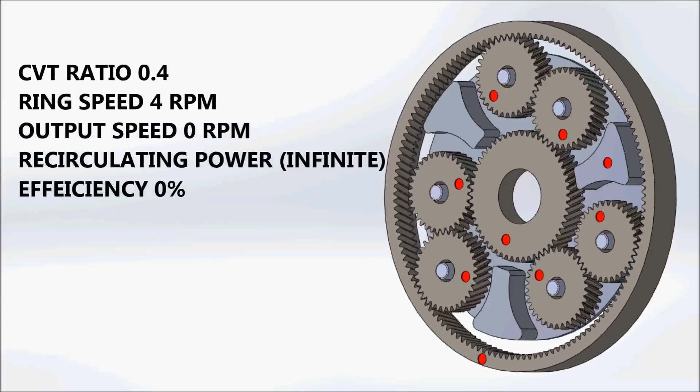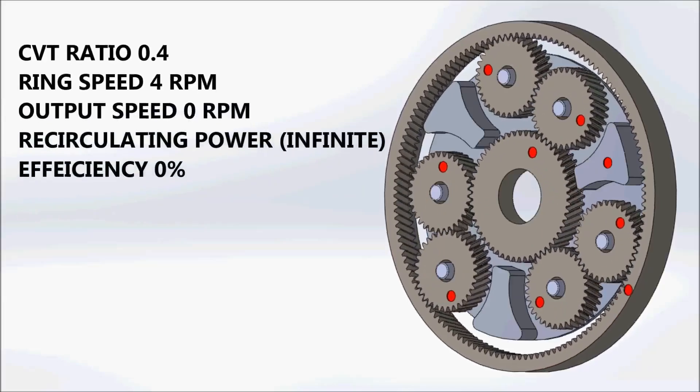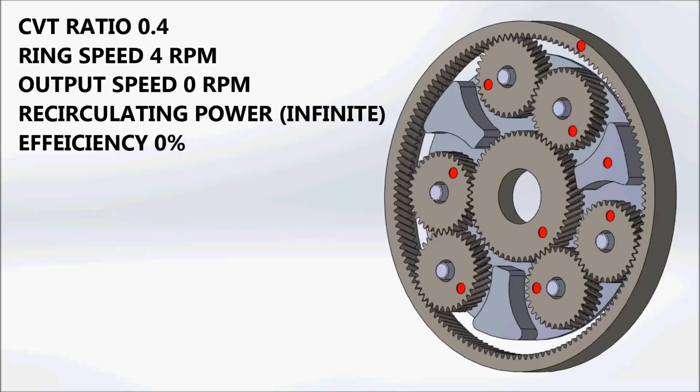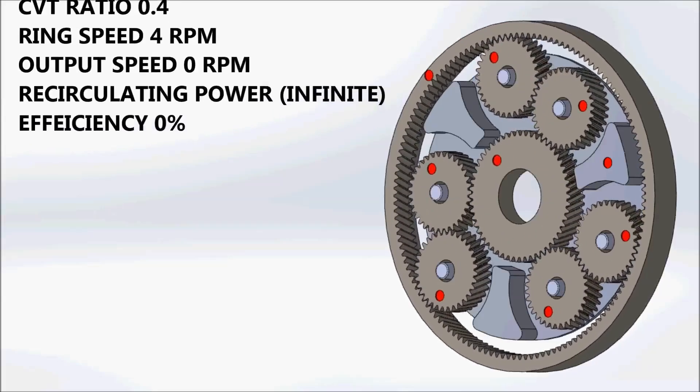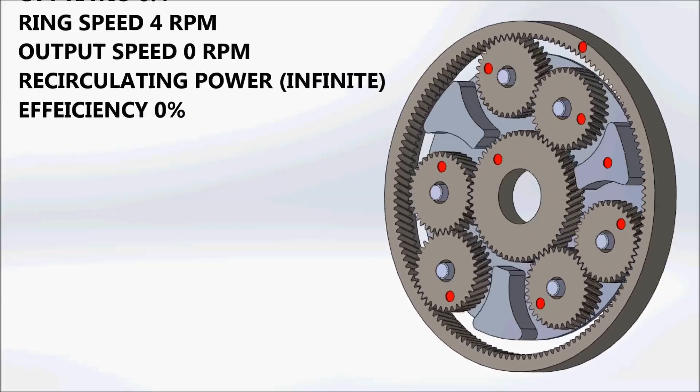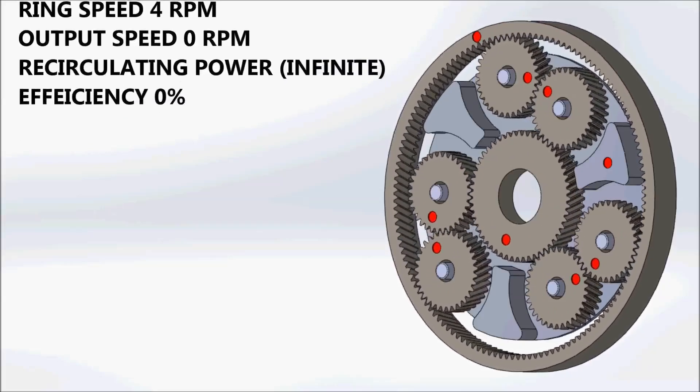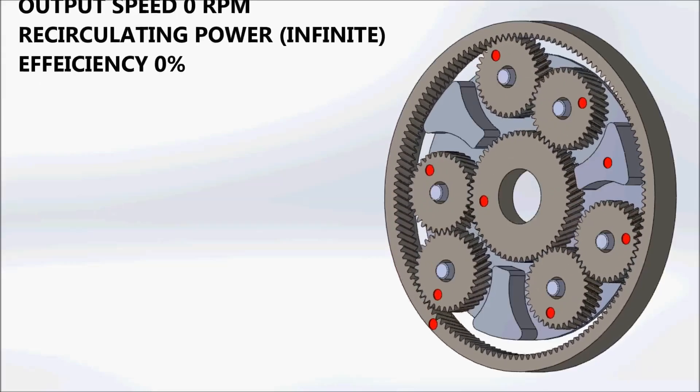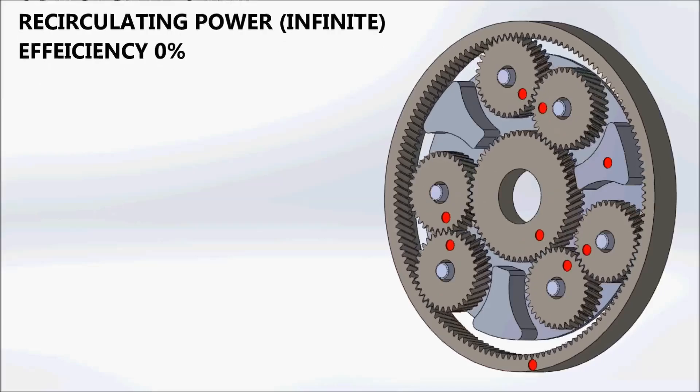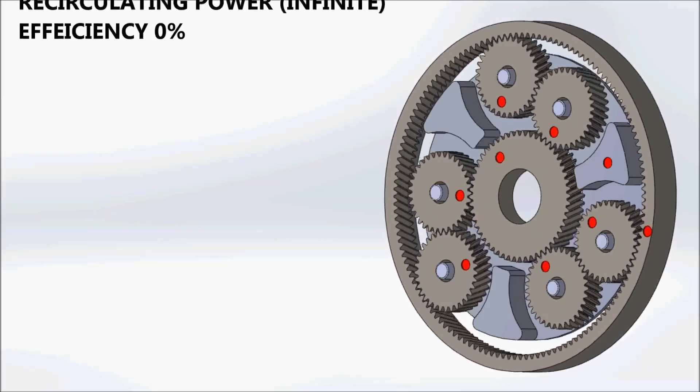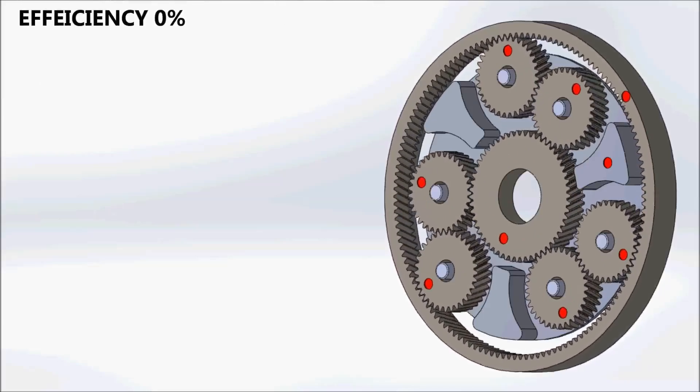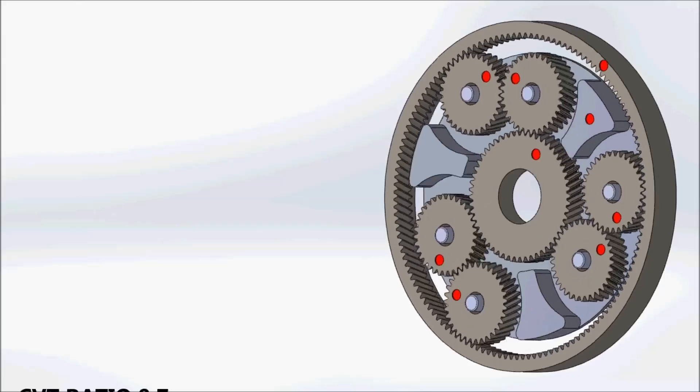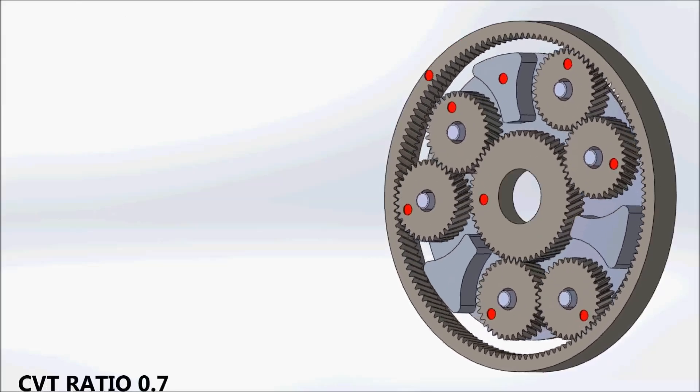The torque limits of this type of split power system are determined not by the input torque, but by the allowable output torque. The ratio spread of an IVT with geared neutral is infinite, because the lowest gear is 0. In this state, the efficiency drops to 0, because although there is some input power required to keep the gears circulating, there is no output energy at all.